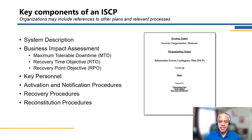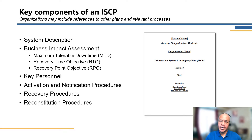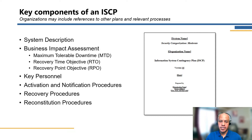So what are the key components of an ISCP? Here we have a few laid out — these are the high-level components, not all-encompassing. We'll have the system description, which covers the system itself, the key components, the key technologies, and the interconnections of the system. The business impact assessment is a key driver of the ISCP overall. Within the BIA, you'll have the maximum tolerable downtime, which is the allowable time for the system to be down before it will materially impact the business function that it supports.